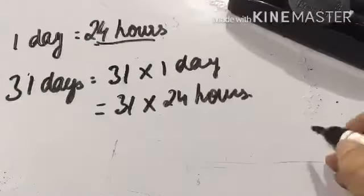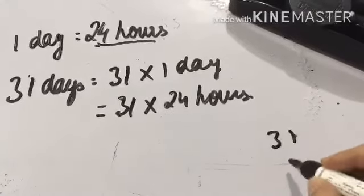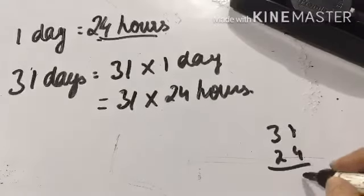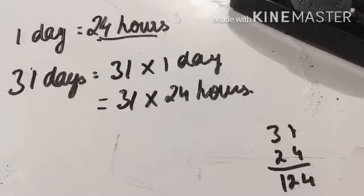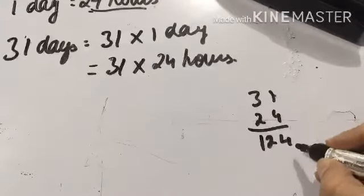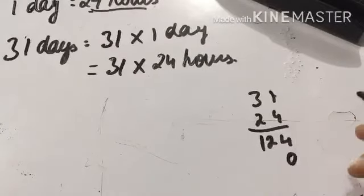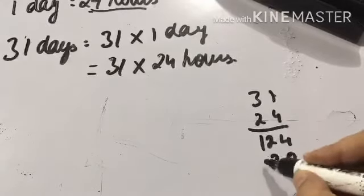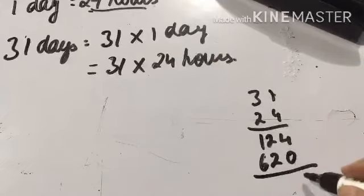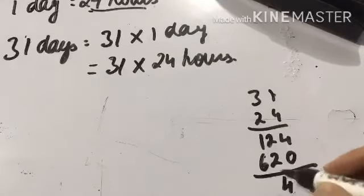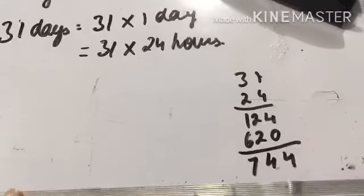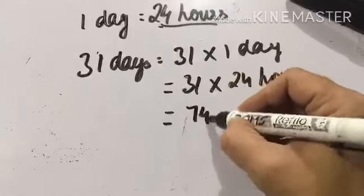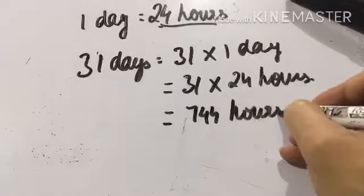The next one is the multiplication of thirty-one by twenty-four. Four ones are four, four threes are twelve. So this is equal to 744 hours. So one month of 31 days is equal to 744 hours.